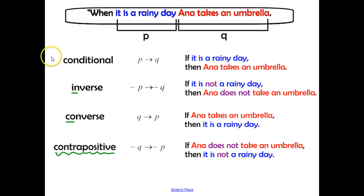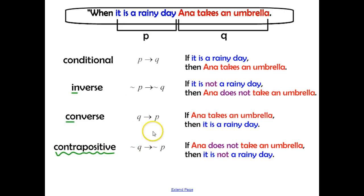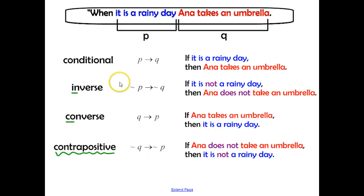It's important to know the four different types and the hints for remembering what to do, as well as what the symbolic notation looks like, so you can take any statement and write it in all four forms. Next time, we'll take these different statements and analyze them further, so make sure you know the four types and how to convert any statement into a conditional.